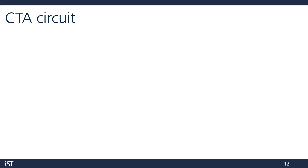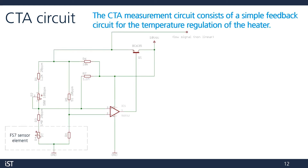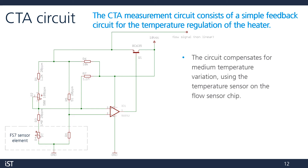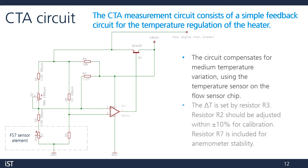Let's see a quick overview of the CTA measurement circuit. It consists of a simple feedback circuit for temperature regulation of the heater — the red rectangles represent different resistors in the circuit. The circuit compensates for temperature variation in the medium using the temperature sensor on the flow chip. The temperature difference — 30°C in our previous example — is set by resistor R3. Resistor R2 should be adjusted within 10% for calibration. Resistor R7 is included for anemometer stability. For more details, please check out our application note on our website.